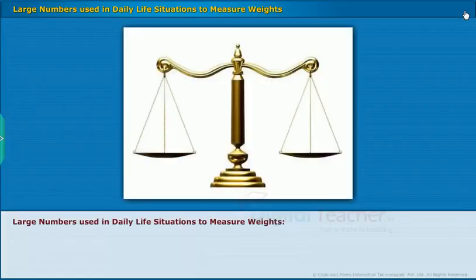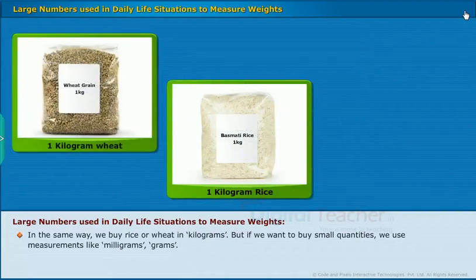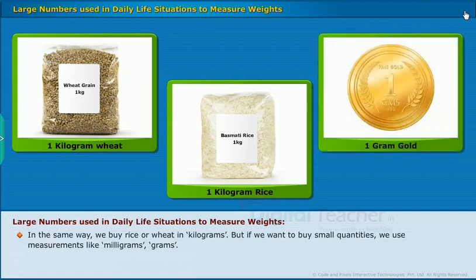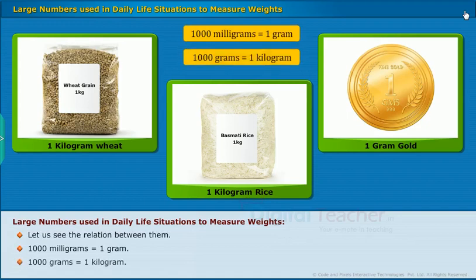Large numbers used in our daily life situations to measure weights: In the same way, we buy rice or wheat in kilograms. But if we want to buy small quantities, we use measurements like milligrams, grams. Let us see the relation between them. Thousand milligrams is equal to one gram. Thousand grams is equal to one kilogram.